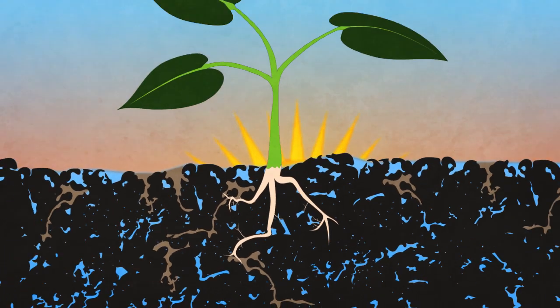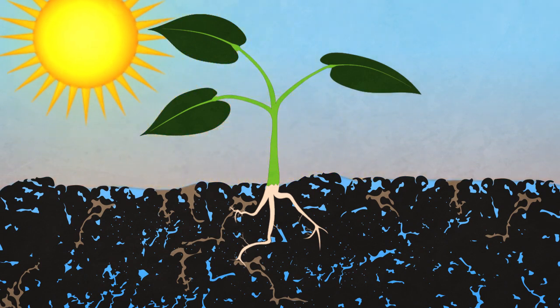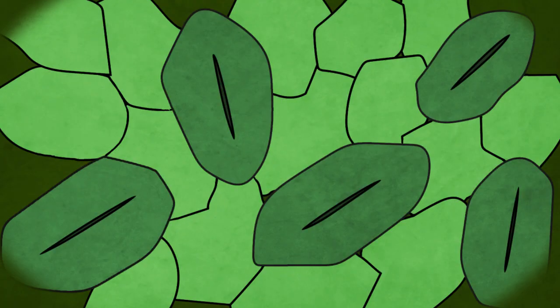Next, the sun comes up and starts shining on our model system. Let's look at the above-ground part of the plant. First, we'll zoom in on the openings of the leaf surfaces, called stomata.